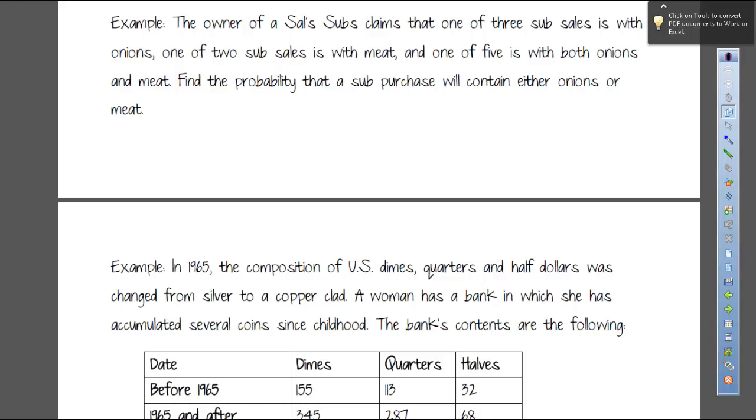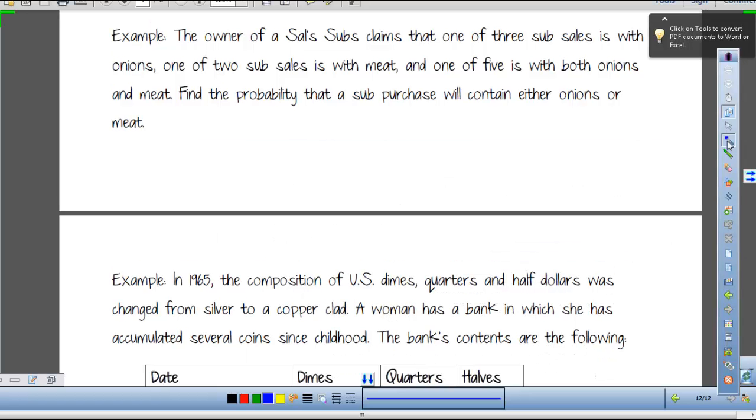The owner of Sal's Subs claims that one of three sub-sales is with onions, one of two sub-sales is with meat, and one of five is with both onions and meat. These events are not necessarily mutually exclusive. They are overlapping. Some of these numbers are included in some of these others. We focus on the question, find the probability that what?